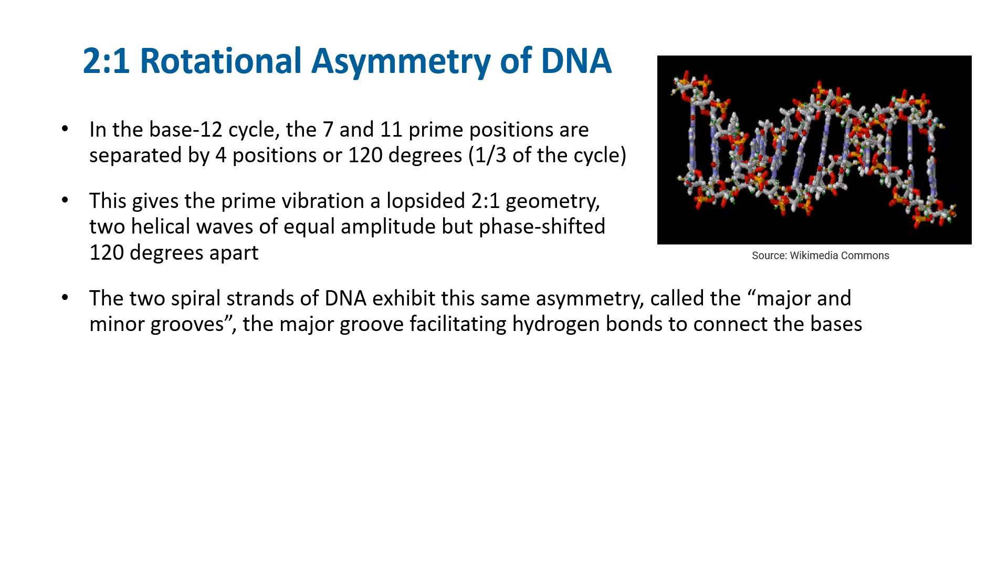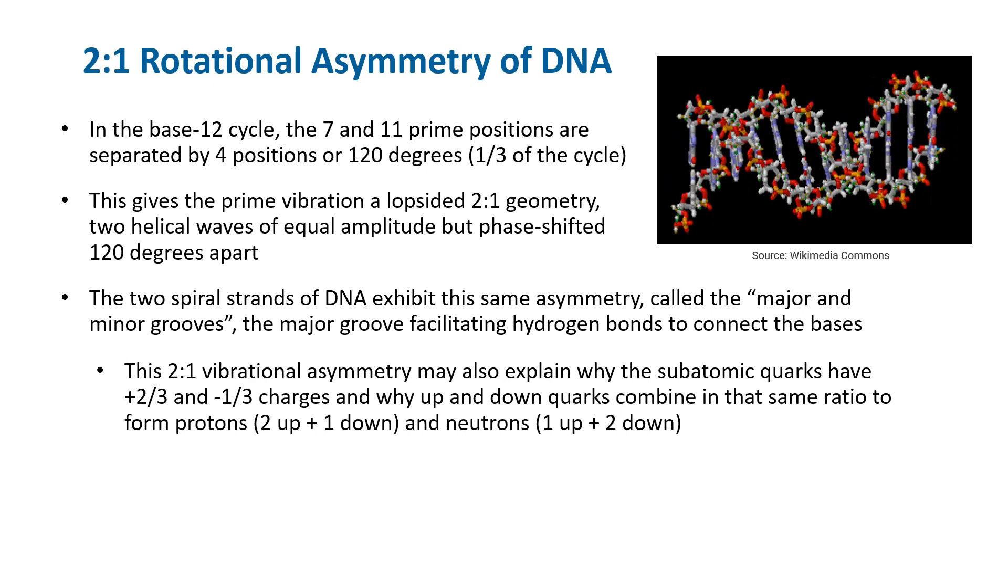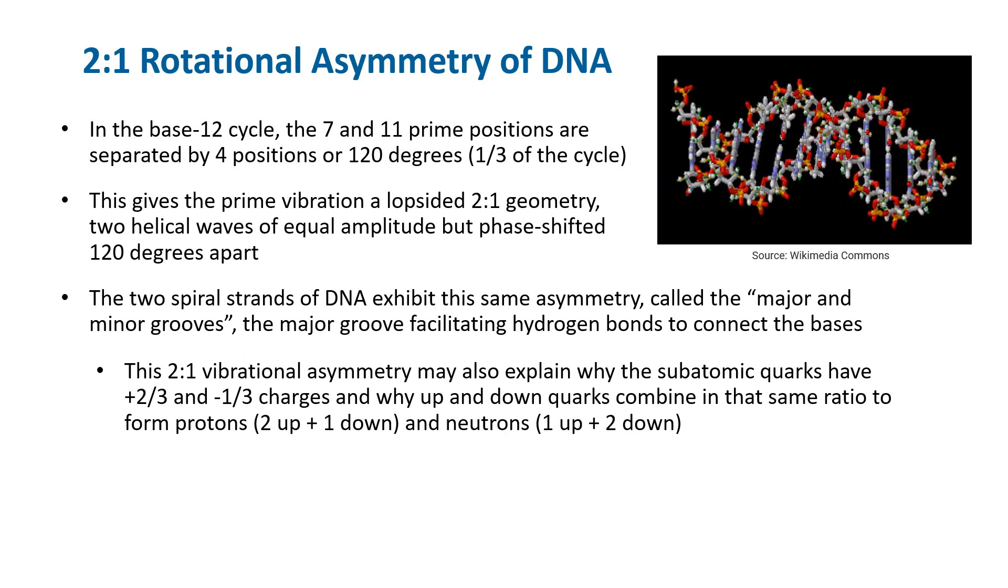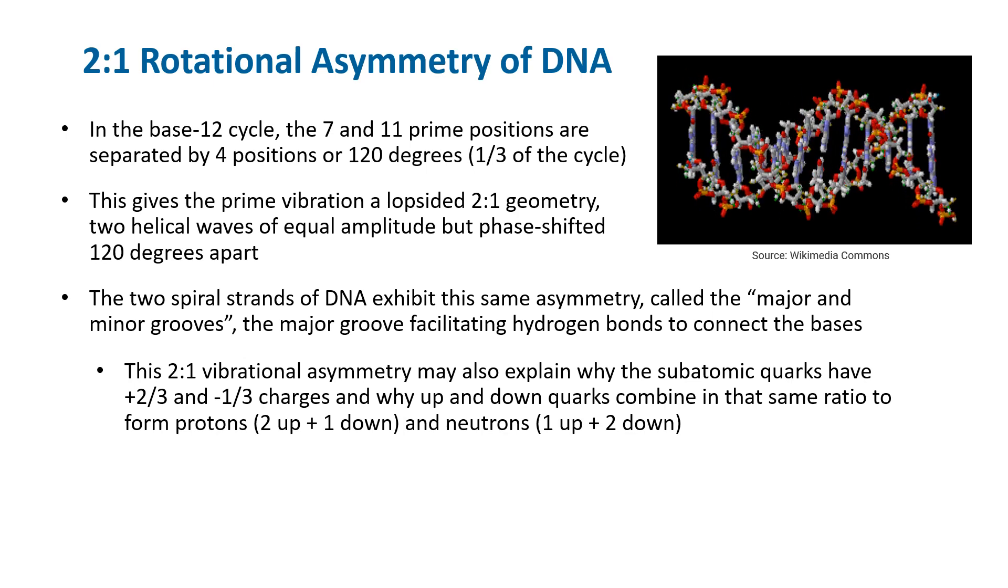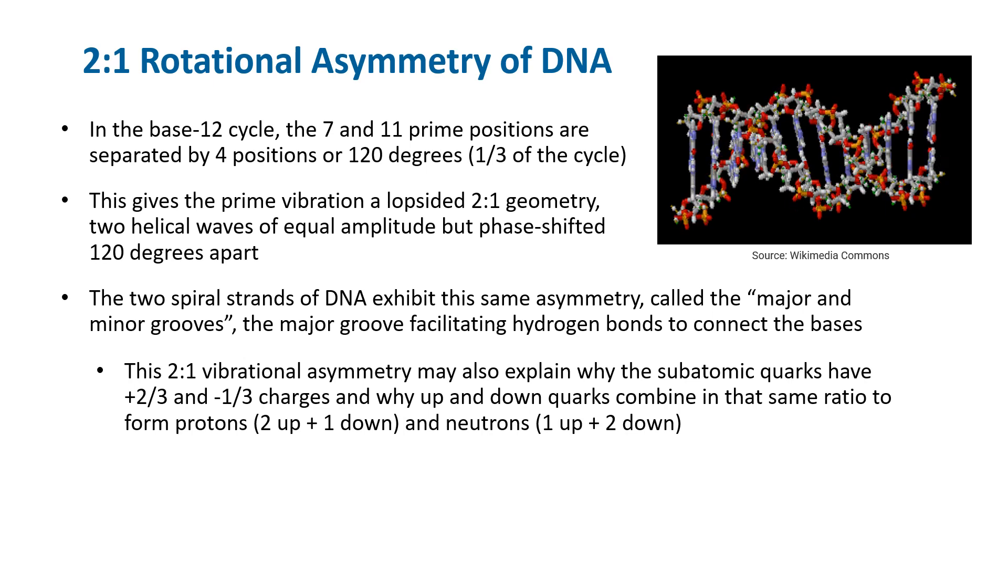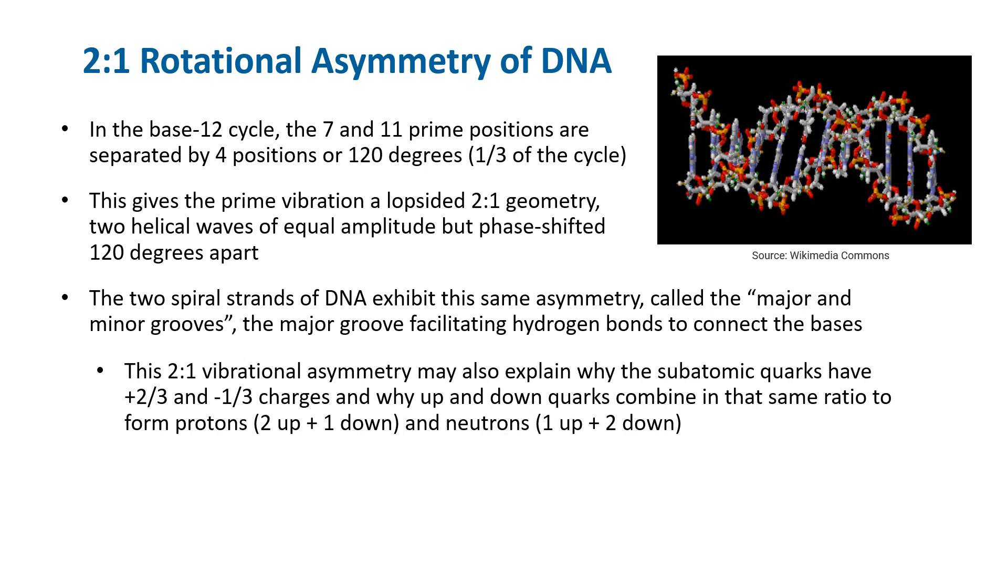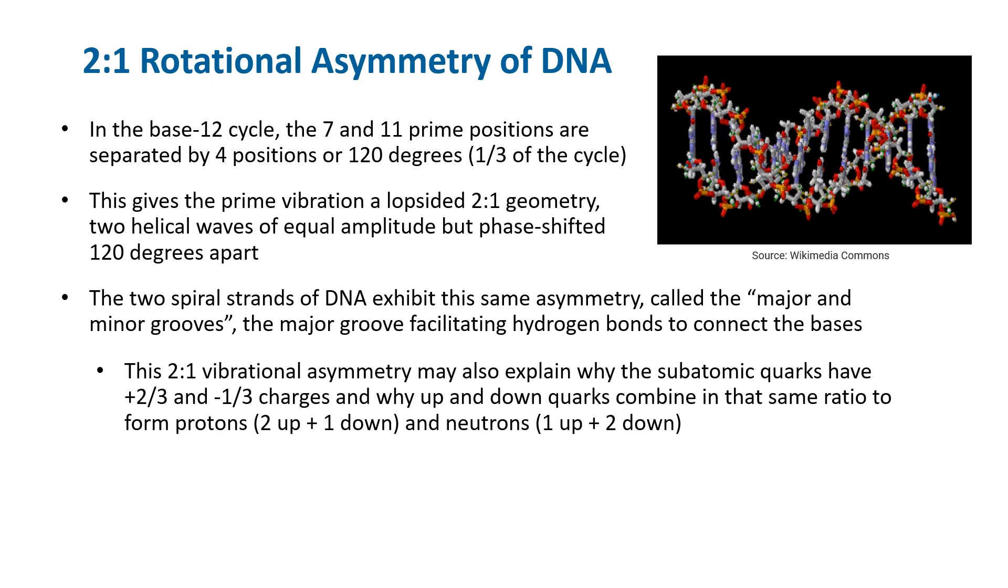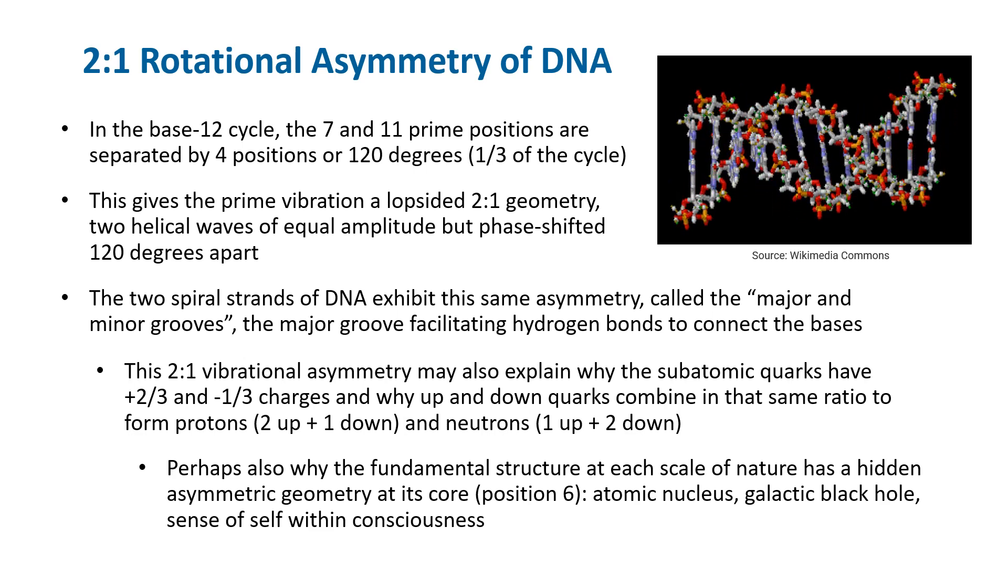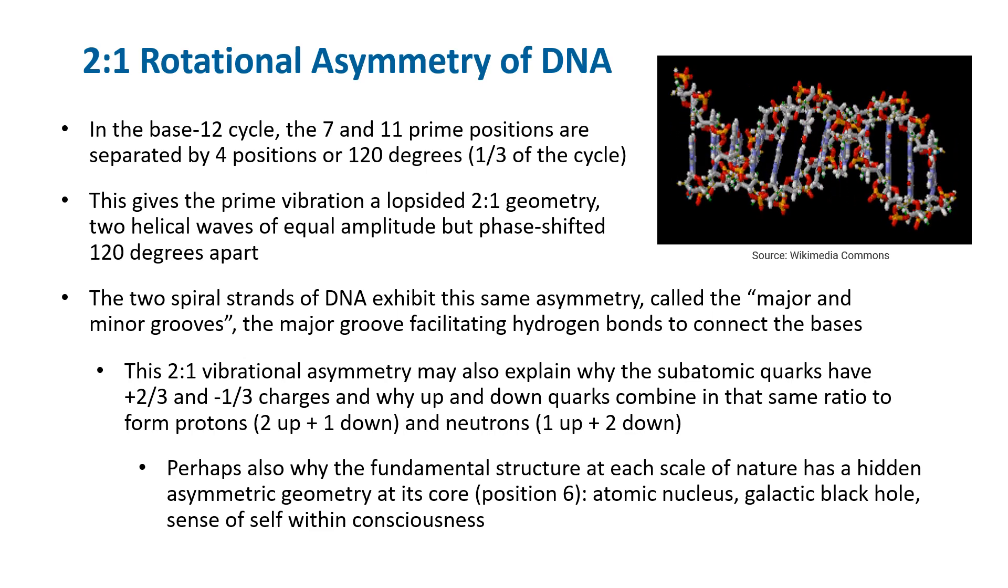This 2 to 1 vibrational asymmetry in the prime vibration may also explain why, at the subatomic scale of nature, quarks have plus two-thirds and minus one-third charges, and why the up and down quarks combine in that same ratio to form protons, two ups and one down, and neutrons, one up and two down, of which all atomic nuclei are made. This asymmetry may likewise explain why the central core of each fundamental structure of nature is hidden from physical perception, from atomic nuclei and galactic black holes, to the point of self within consciousness.